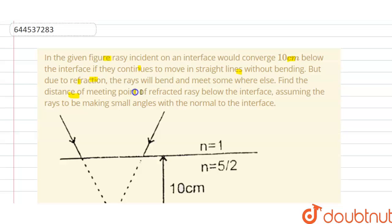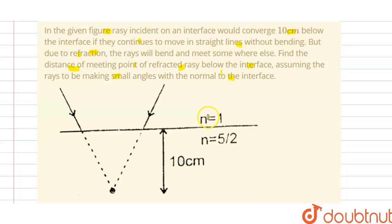So we have to find the distance of the meeting point of the refracted ray below the interface, assuming the rays to be making small angles with the normal to the interface. We have refractive index n1 is 1 and n2 is 5 by 2, and we have 10 centimeter here given to us. They are bending, so we have to find the apparent depth.